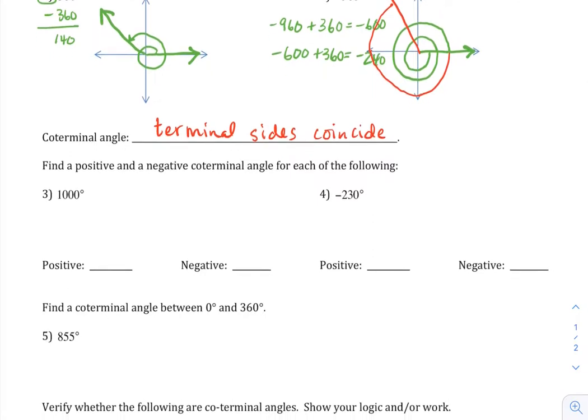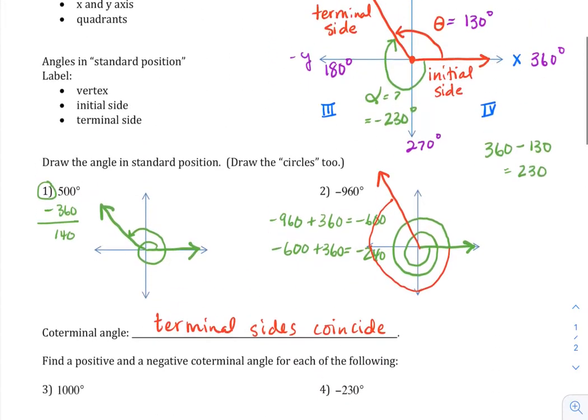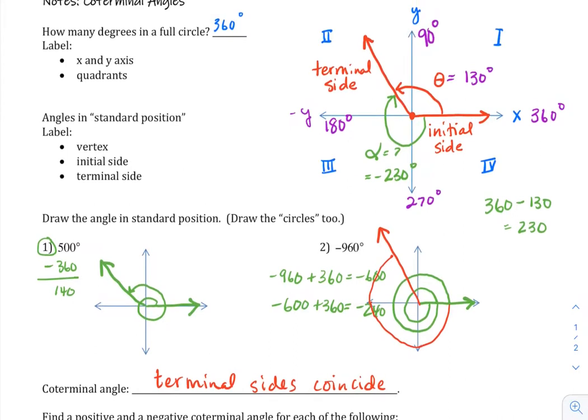They're basically the same angle. Just like up here, the 130 degree angle is the same as the negative 230 degree angle because they have the same terminal side.